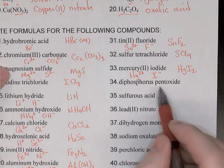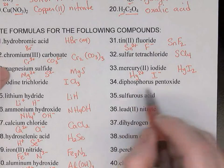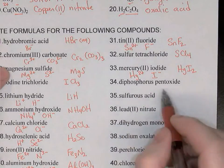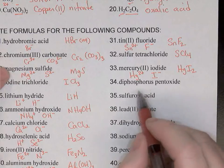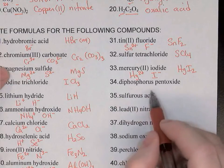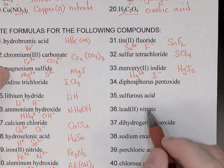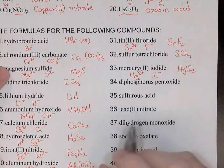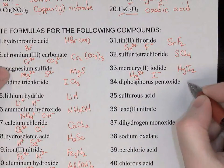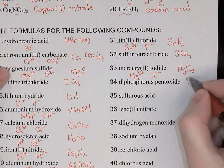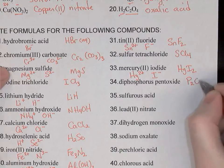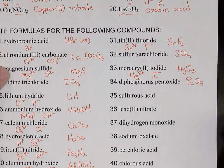Diphosphorus pentoxide is clearly covalent or molecular with all those prefixes, and phosphorus and oxygen are nonmetals — another clue. So the name gives us the formula: P2O5.